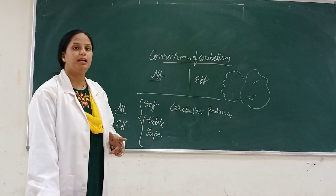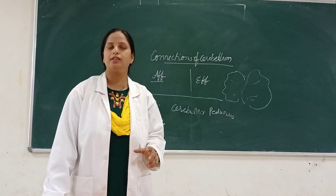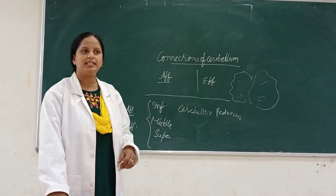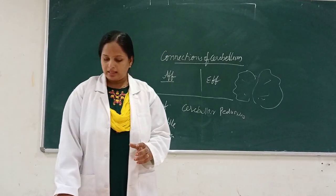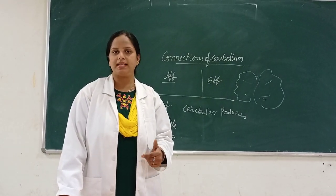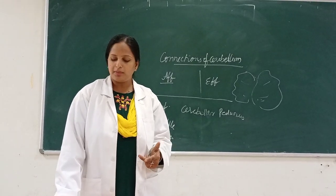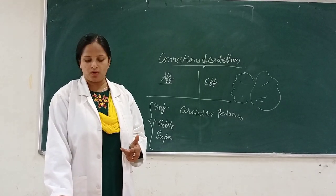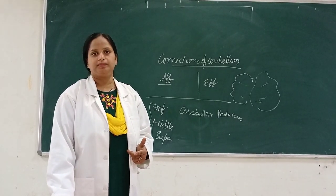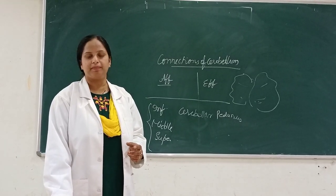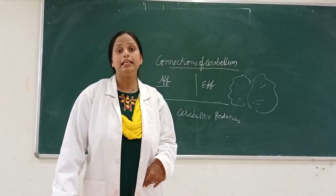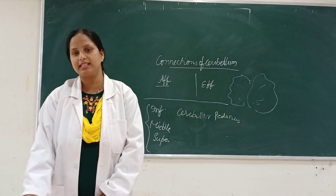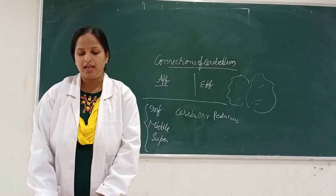We have seen the connections of the cerebellum — the afferents and efferents — and how it is connected with different parts of the brain and also to the periphery. Now we summarize the functions of the cerebellum. The cerebellum plays an important role in: control of muscle tone, control of voluntary activity, control of involuntary activity, control of equilibrium, and in learning.